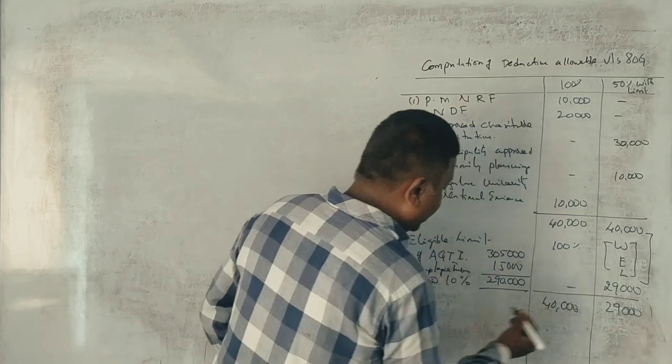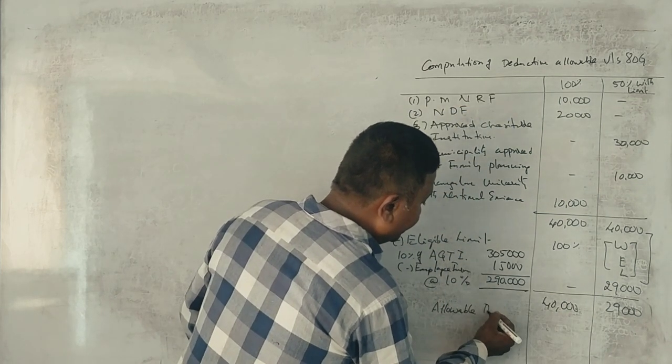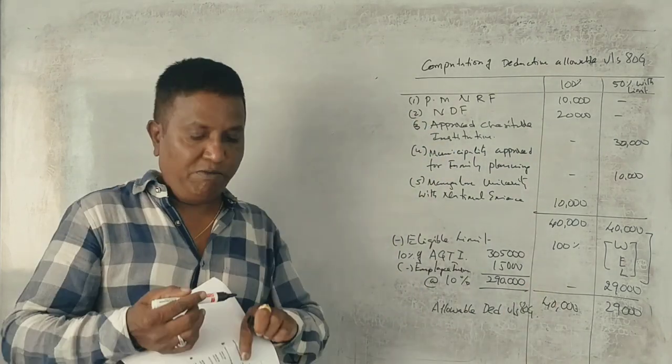40,000. This is allowable deduction under section 80G. 5 marks, okay?